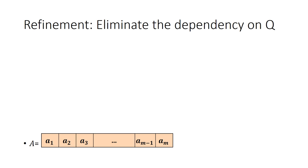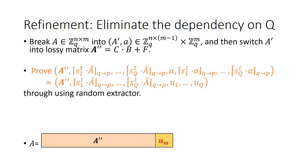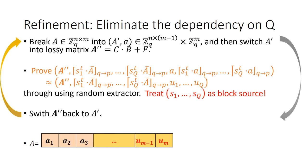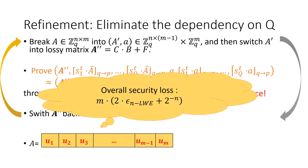Then, we look at how to eliminate the dependency on Q in the security proof of QLWR. In contrast to original proof of Alwen et al., we just replace a single vector with a block source S1 to SQ. Due to Q is related to statistical indistinguishability, the overall security loss is still 2 times epsilon plus 2 to negative n times m, which is independent of Q. This essentially implies almost tight security. But the security loss still scales up with the parameter m due to the hybrid argument.